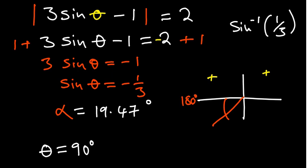180, and the last one you subtract from 360. So using our value of 19.47, we'll start by adding it to 180. So 180 plus 19.47, I'm getting a value of 199.